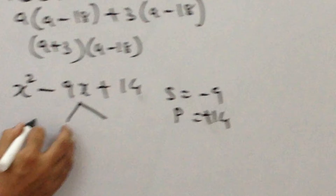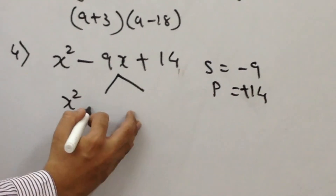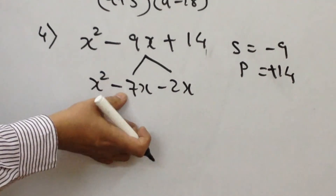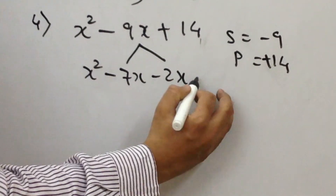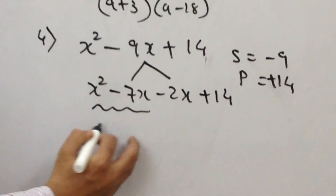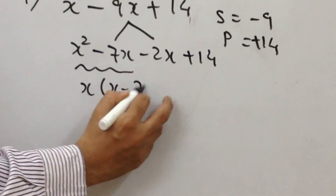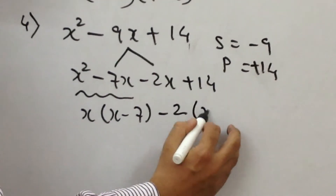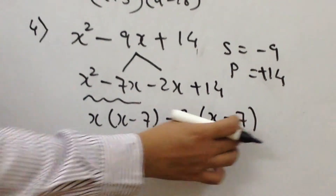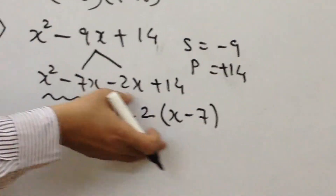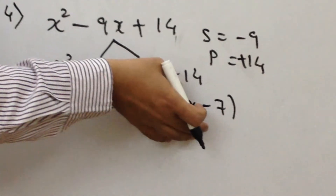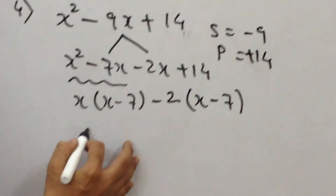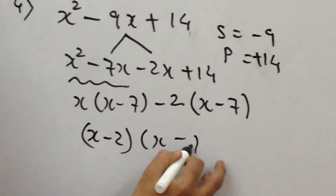Let's factorize. The first term remains as it is: x squared. The two numbers are minus 7 and minus 2, so we write minus 7x minus 2x. Minus 7 minus 2 gives minus 9, and minus 7 into minus 2 gives plus 14. Removing common factors: x into x minus 7, then minus 2 common — since minus sign is taken outside, inner sign changes, giving x minus 7. Verification: minus 2 into x is minus 2x, minus 2 into minus 7 is plus 14; x into x is x squared, x into minus 7 is minus 7x. Answer is x minus 2 into x minus 7.